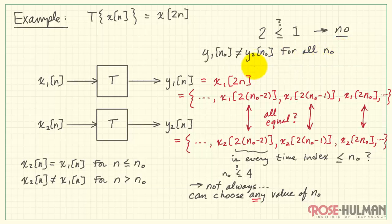So from these two examples, we see that Y1 of n naught is not equal to Y2 of n naught for all possible choices of n naught. Therefore, T is not causal.